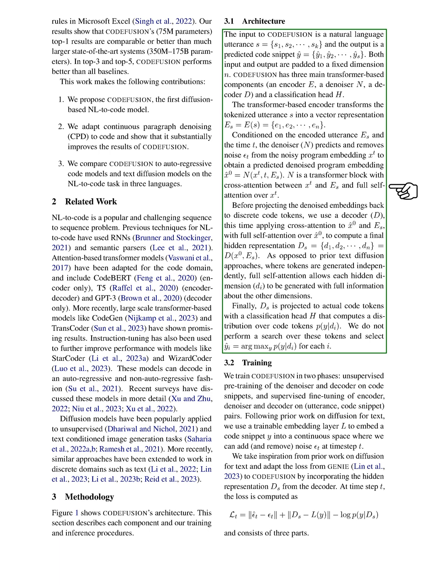Before projecting the denoised embeddings back to discrete code tokens, we use a decoder to compute a final hidden representation. As opposed to prior text diffusion approaches where tokens are generated independently, full self-attention allows each hidden dimension to be generated with full information about the other dimensions.